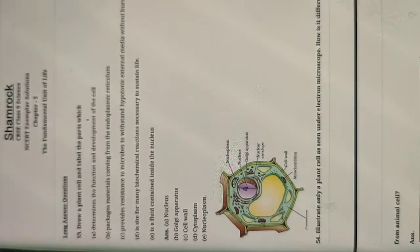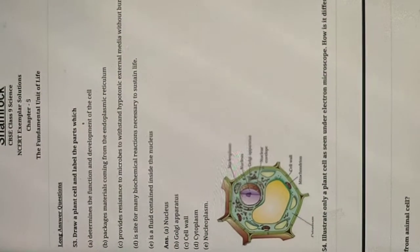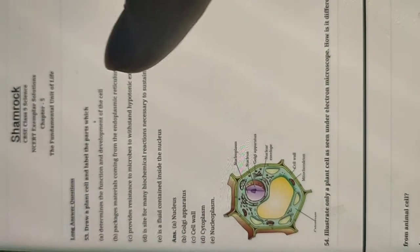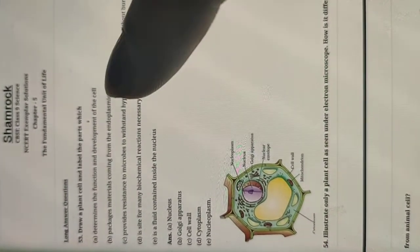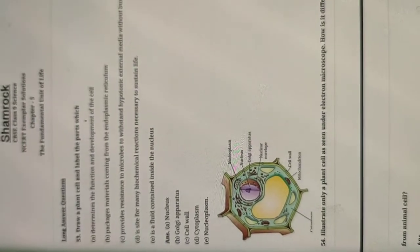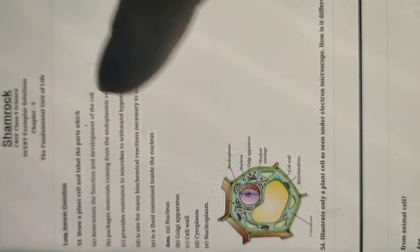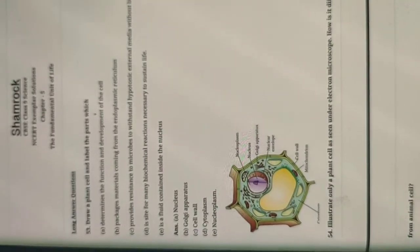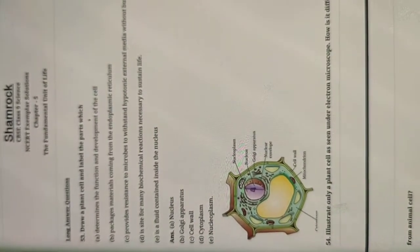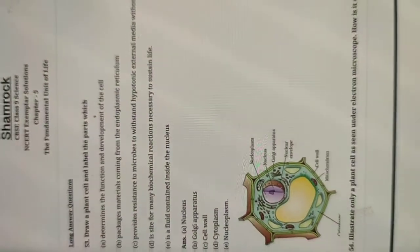The first question says: draw a plant cell and label the parts. This is a very important thing to note — they have not given you direct labeling. They have given you a definition or a question, and you have to identify the part and mark that label accordingly.